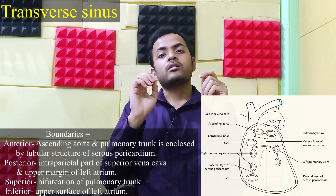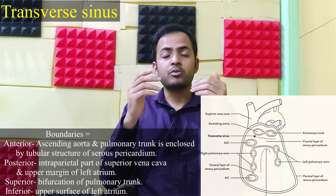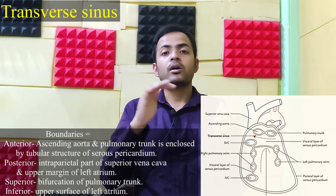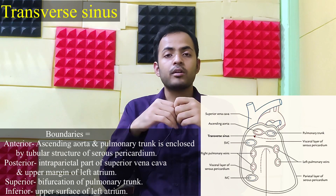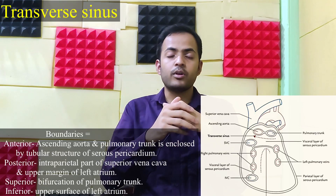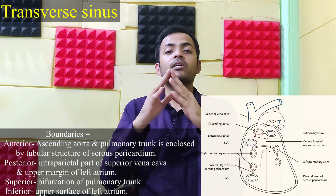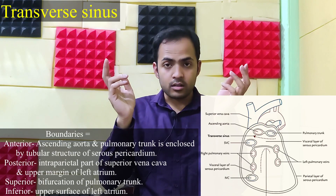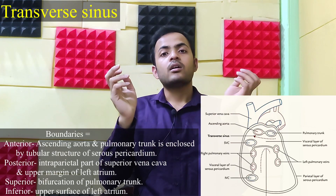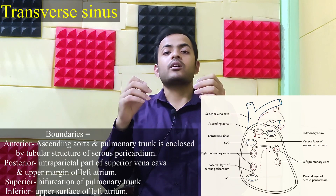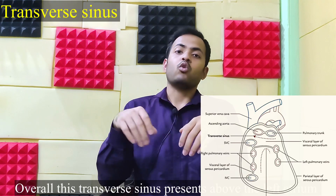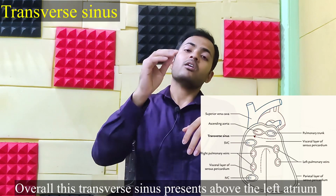Posteriorly, you will find the intraparietal part of the superior vena cava and the upper margin of the left atrium. Superiorly, you will find the bifurcation of the pulmonary trunk, and inferiorly you will find the upper surface of the left atrium. So overall, this structure is present above the left atrium.